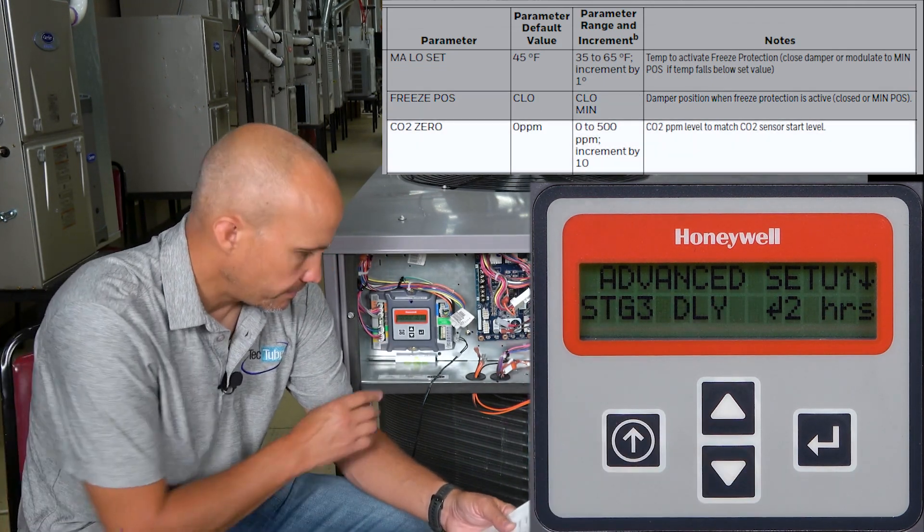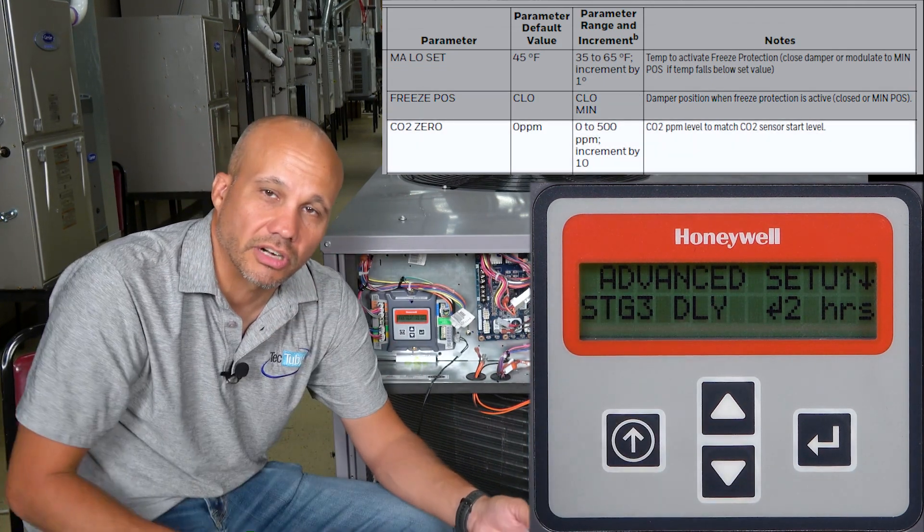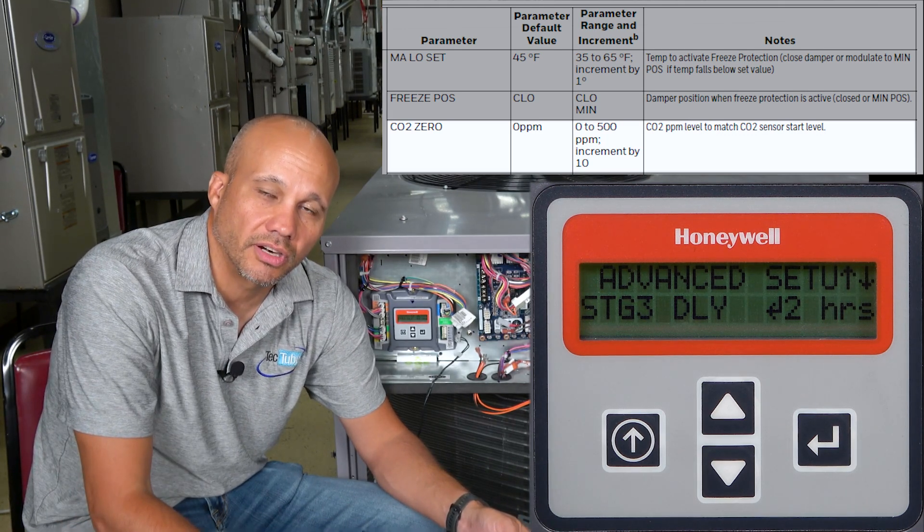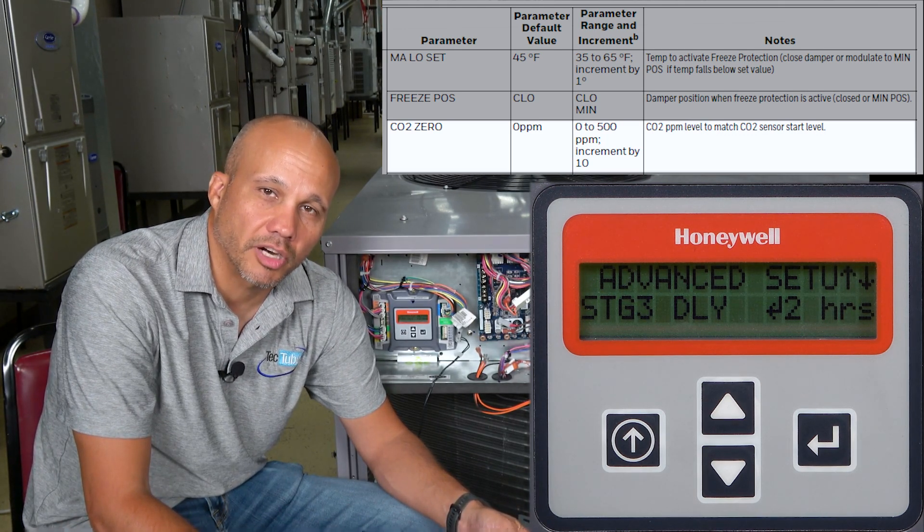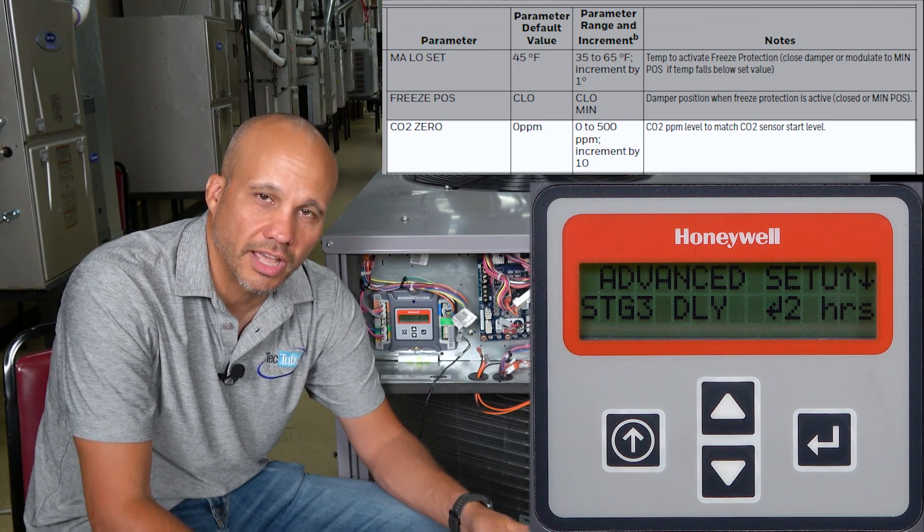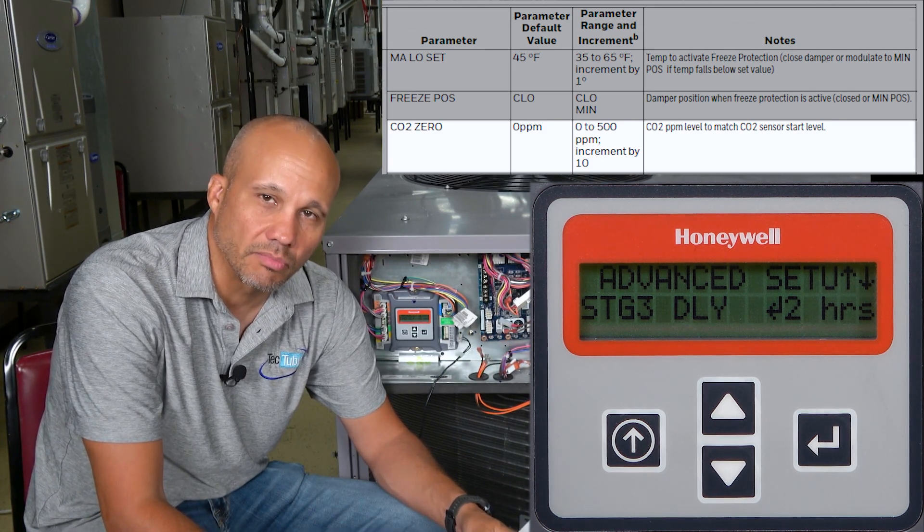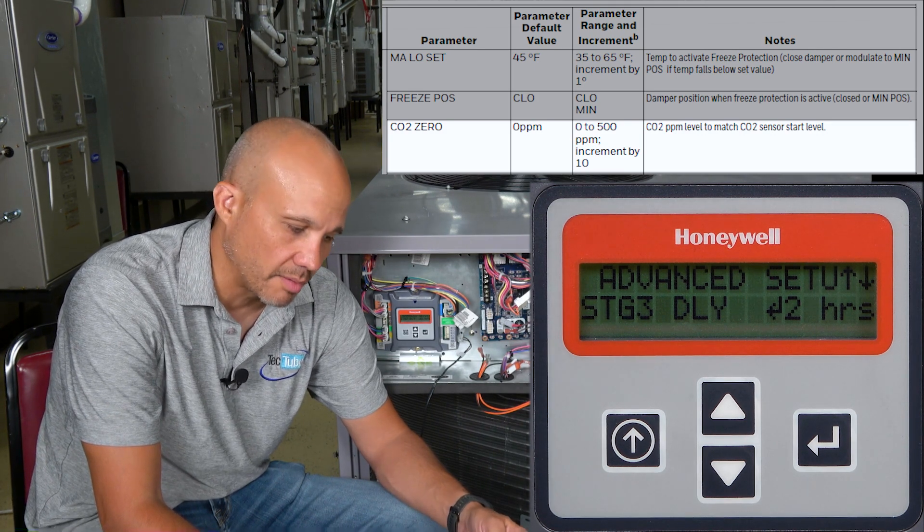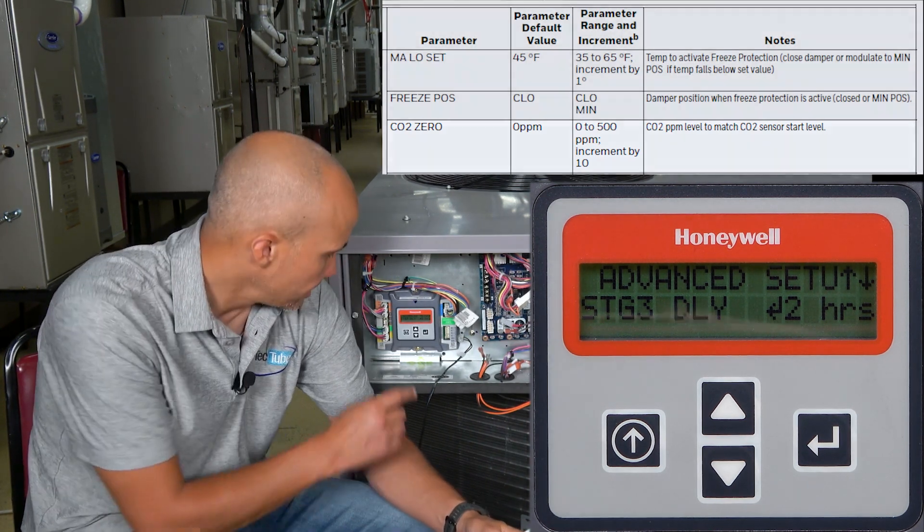The CO2 sensor - I don't have one on the screen here because I don't have one wired in. There's a zero and a span, zero to 2,000 parts per million, which is what almost every single commercial grade CO2 sensor runs at. So you would leave that alone in most applications. If you had something special you bought, then you might come in here and change that.